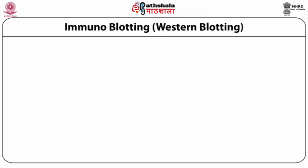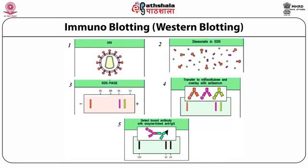Let us look at another technique called immunoblotting, also known as Western blotting. Presence of a protein in a cell lysate or any crude mixture can be detected by Western blotting. The SDS-PAGE of the cell lysate is carried out. Bands of proteins from the gel are transferred to a nitrocellulose membrane, which is more robust support. Radioisotope labeled antibody specific to the target protein is added and binds to the band if that protein is present. This general methodology will detect any combination of antibody and antigen, although the denaturing effect of SDS means the technique works most reliably with antibodies that recognize the antigen when it is denatured.